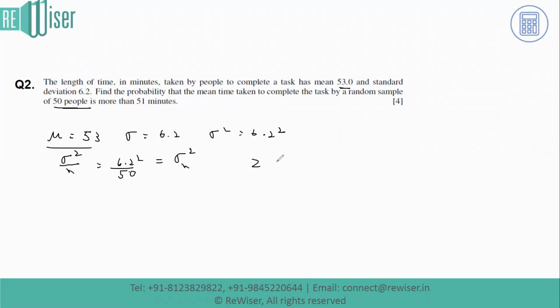We'll calculate the z-score using the formula x minus mean divided by sigma over root n. The value of x is 51 minutes, the mean is 53, divided by the square root of 6.2 squared divided by 50.